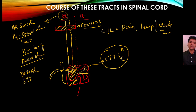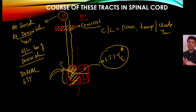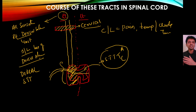At the level of the lesion, on the same side, there is loss of both dorsal column pathway sensations and spinothalamic tract sensations — meaning loss of fine touch, pressure, vibration, stereognosis, tactile localization, tactile discrimination, pain, and temperature. Everything is lost on the same side at the level of the lesion.